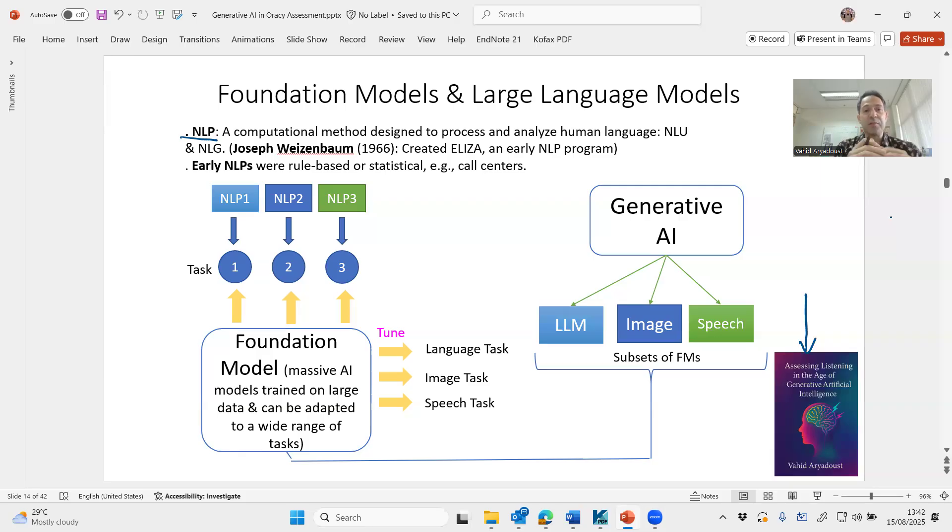NLP is a computational method that is designed to process and analyze human language. There are different ways of using NLPs or there are different functions for NLPs. One is natural language understanding or NLU. The other one is natural language generation or NLG. And there are other methods as well, which I haven't indicated here, but they include TTS or text-to-speech or automated speech recognition. And a combination of all of these technologies, that's NLU, NLG, TTS, ASR, etc., which will give you an SDS, which stands for Spoken Dialogue Systems.